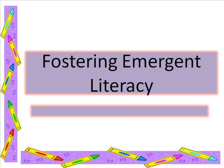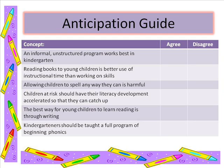Welcome to Fostering Emergent Literacy. We will be discussing how to foster emergent literacy, which is the reading and writing behaviors that precede and develop into conventional literacy. We will start this mini-lecture with an anticipation guide. Pause the mini-lecture and print off the lecture notes to complete the anticipation guide and to take any additional notes during the mini-lecture. For each of the statements, put a check under Agree or Disagree to show how you feel. Be prepared to discuss your responses with classmates.